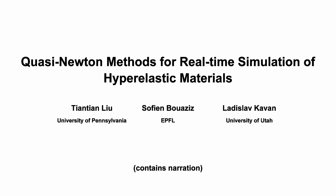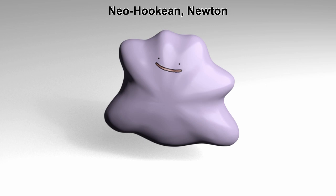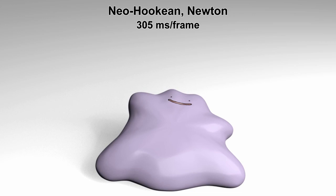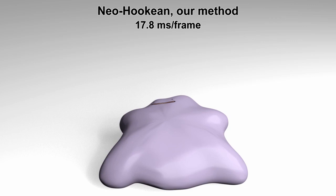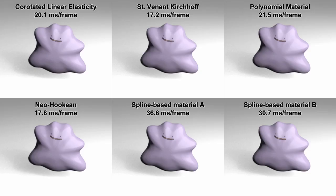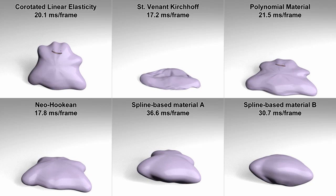Newton's method allows us to simulate many interesting hyper-elastic materials, but it is computationally expensive. We present a new numerical method which is much faster and does not compromise the accuracy of simulated materials. Our method produces realistic simulations with many different hyper-elastic materials.